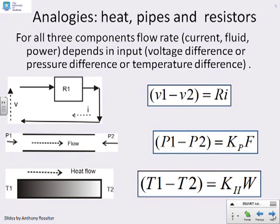Analogies, then. Let's look at the expressions that we've got from an electrical circuit with a single resistor, or a pipe with a pressure difference, or here, a conductor with a temperature difference. What do you notice? Well, all three components we're talking about flow rate. It could be the flow of current, it could be the flow of fluid, or it could be the flow of energy, i.e. power.